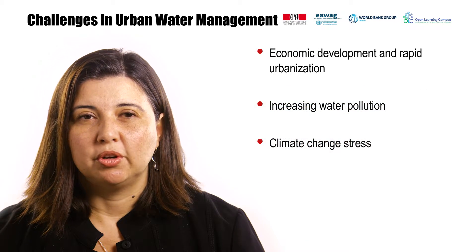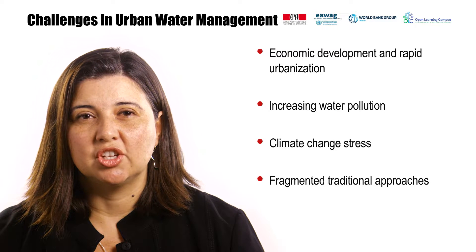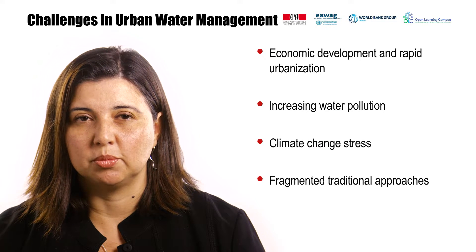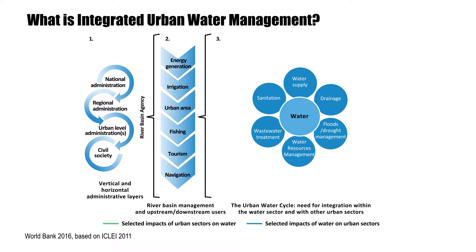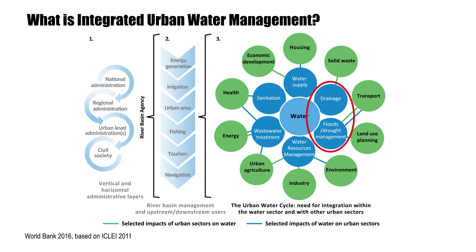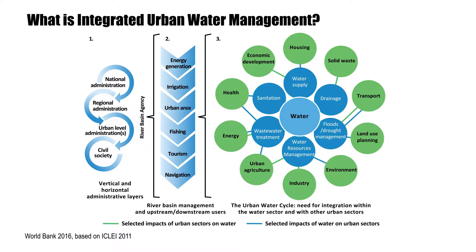Traditional approaches to urban water investments are often fragmented and frequently unsustainable, since they generally do not take into consideration the multiple dimensions and cross-cutting issues of urban water management. Integrated urban water management, or IUWM, is a flexible, participatory, and interactive process which integrates the elements of the urban water cycle — such as water supply, sanitation, stormwater management, and solid waste management — within the context of a city's land use, urban development, and river basin management, in order to maximize economic, social, and environmental benefits.